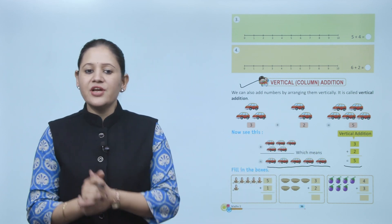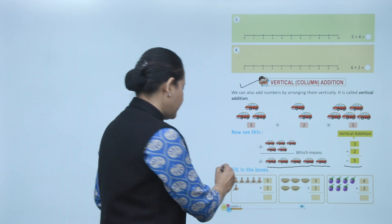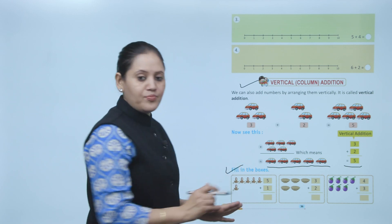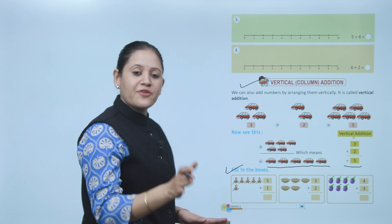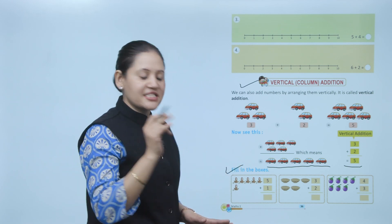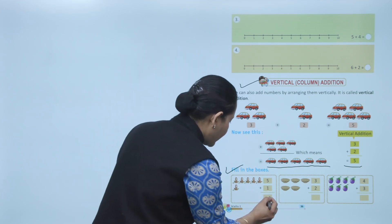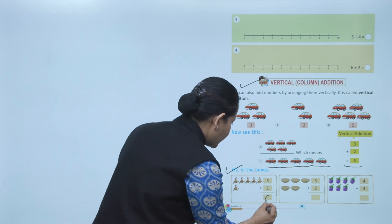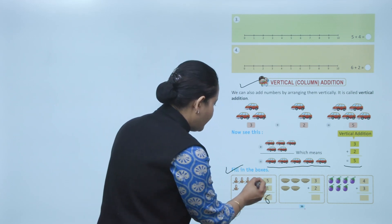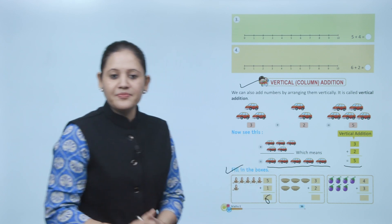Next, fill in the boxes. We can write it vertically. Five plus one — when we add one to the given number we get the next number. Five plus one equals six: one, two, three, four, five, six.